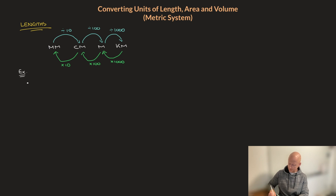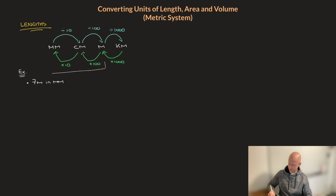As a first example, let's say we're asked to write seven meters in millimeters. Looking at the conversion diagram, to get from meters to millimeters, I place myself on the meters and follow the path along these green curved arrows. In doing so, I can see that I'd have to multiply my length in meters by 100, and then by 10 — in other words, by 100 times 10, which is 1000. So seven meters in millimeters would be 7 times 1000, which is 7,000 millimeters.